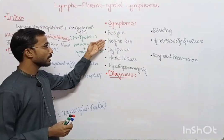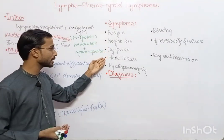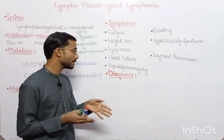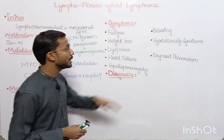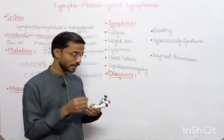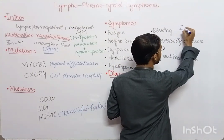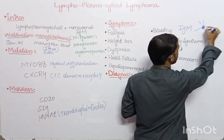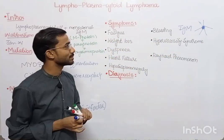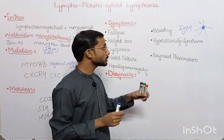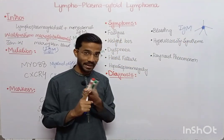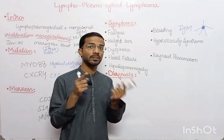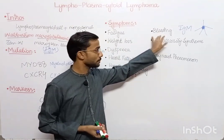Symptoms include pain, weight loss, dyspnea (shortness of breath, difficulty in breathing), heart failure, and hepatosplenomegaly — enlargement of the liver and spleen. Bleeding also occurs in this disease because IgM is actually pentameric. This pentameric antibody present in the blood will interfere with platelets and coagulation factors, causing bleeding in the patient.